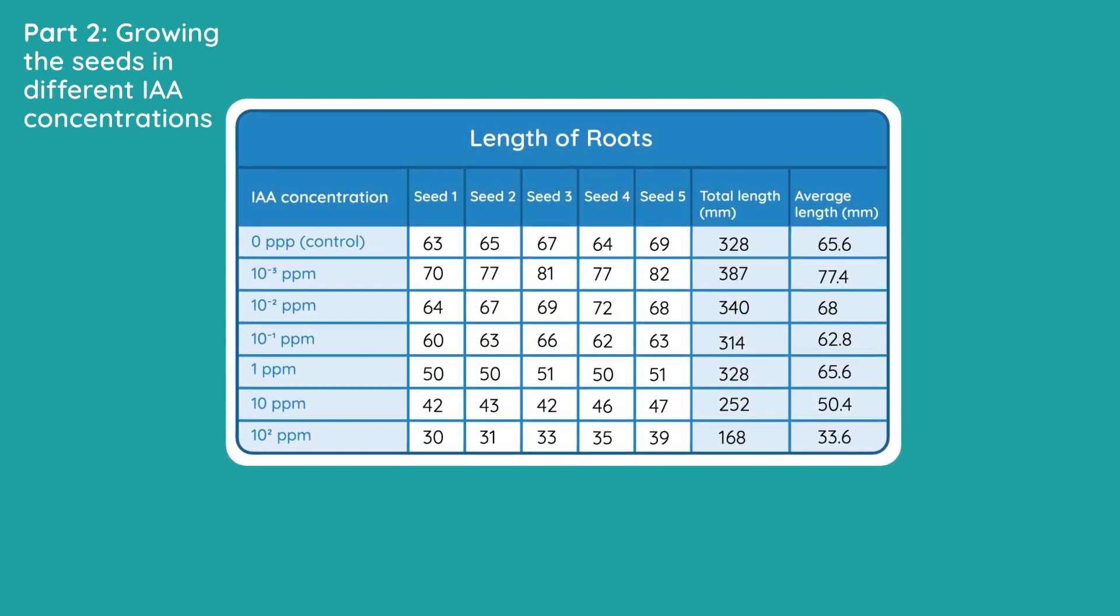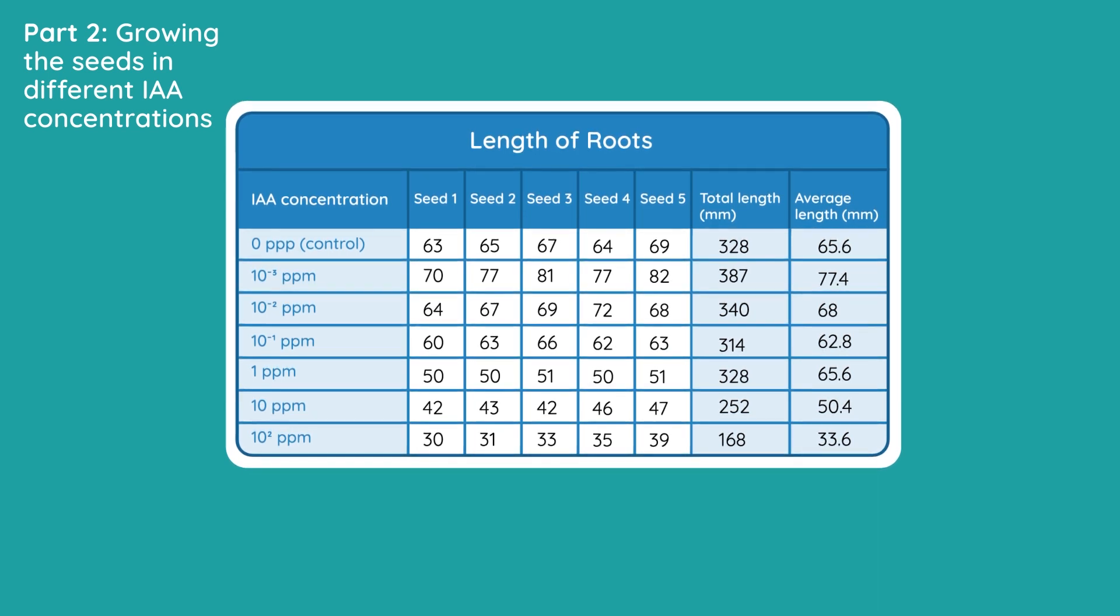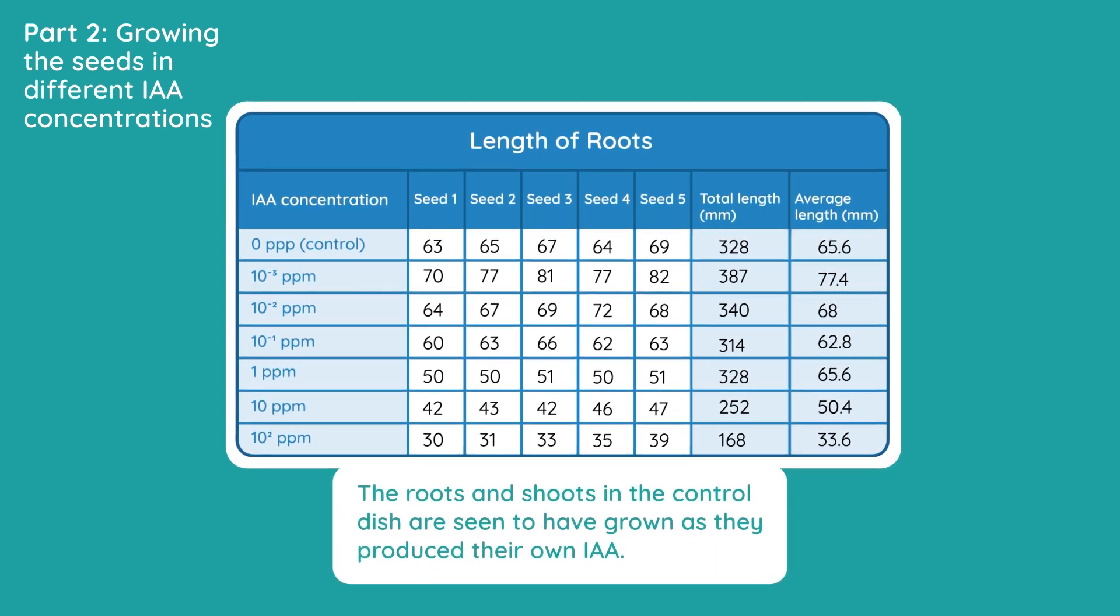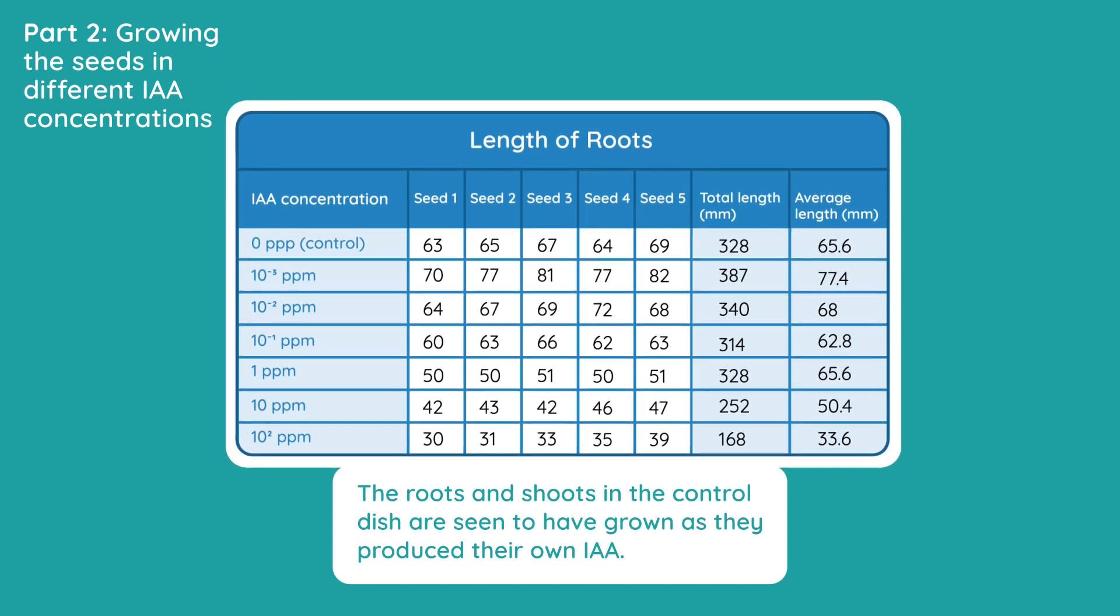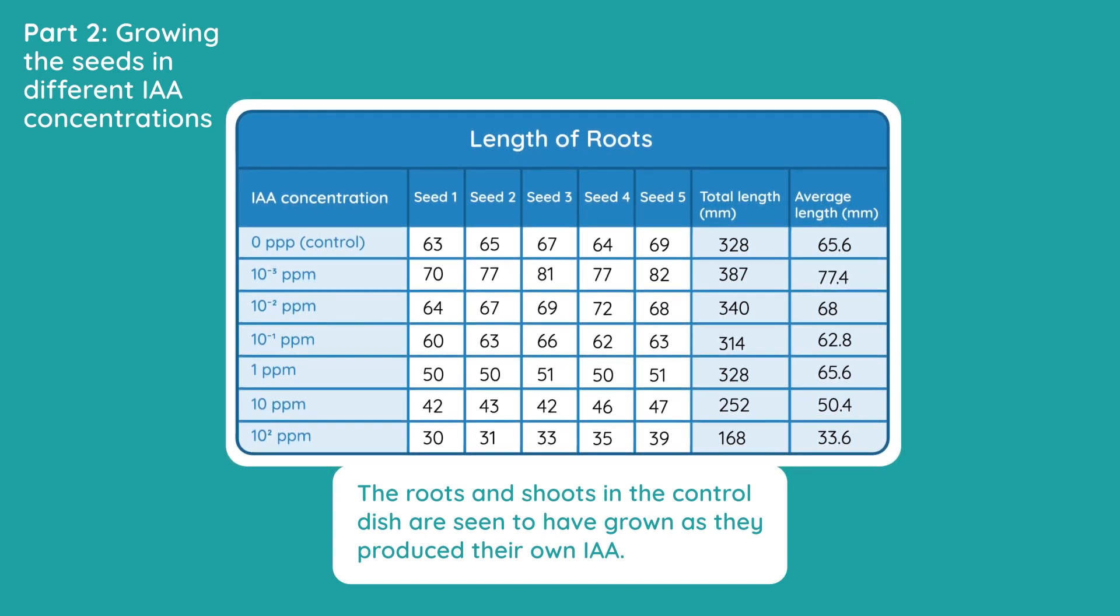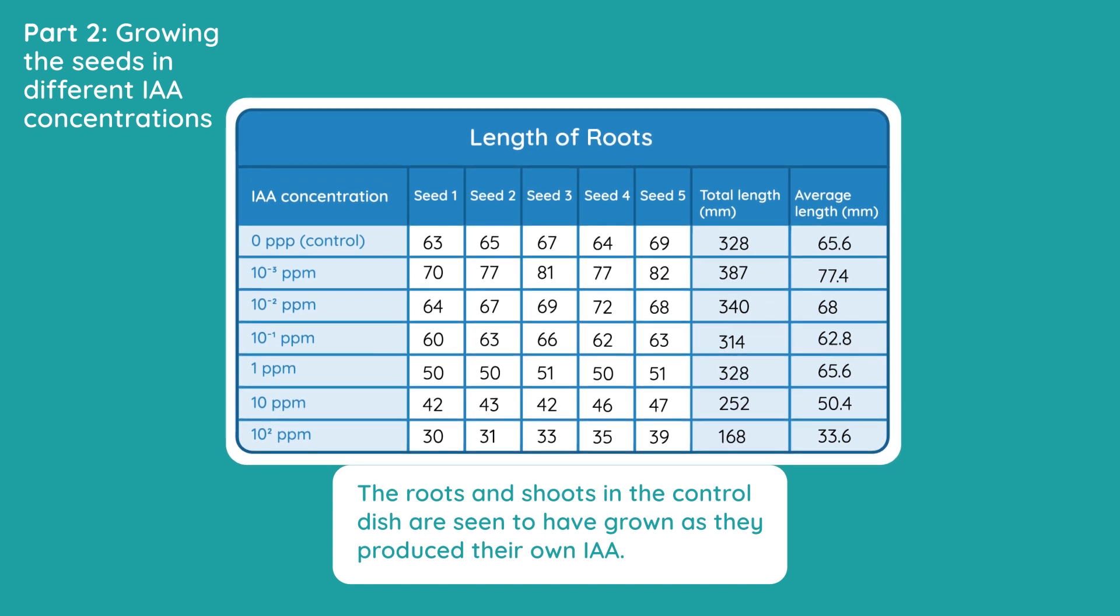So, on to expected results and conclusions now. The roots and shoots in the control dish are seen to have grown, as they produce their own IAA. And then we compare the growth of the seedlings in the other dishes, to the growth of the seedlings in the control dish.